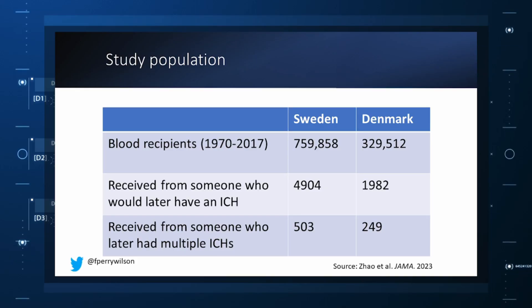Of course, most of those blood donors — 99% of them actually — never went on to have any bleeding in the brain. It's a rare thing, fortunately. But some of the donors did, on average within about 5 years of the time they donated blood. The researchers characterized each donor as either never having a brain bleed, having a single bleed, or having multiple bleeds. The latter is most strongly associated with CAA.